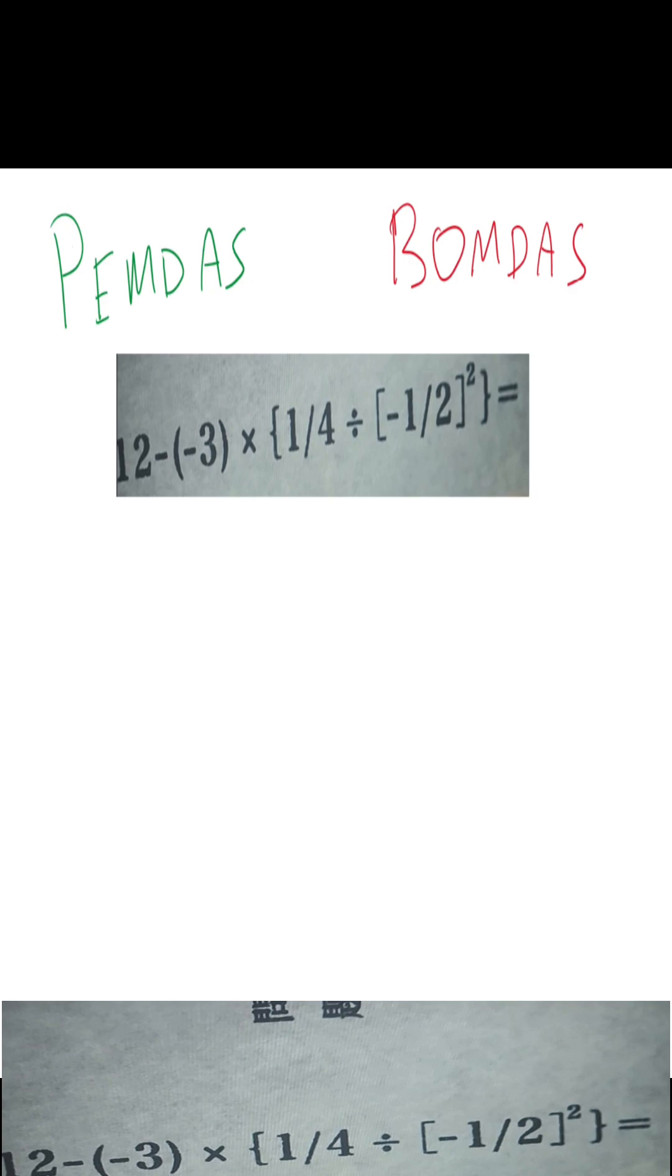Literally, the only difference is the P here stands for parentheses and B here stands for brackets. But we're going to treat those kind of interchangeably. So we're going to use either or. The E here stands for exponents and O stands for order, which is also just exponents.